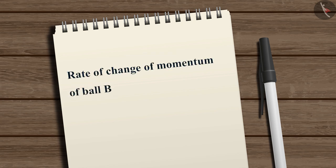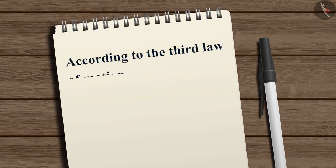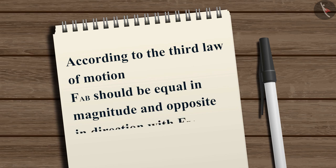In the same way, the rate of change of momentum of ball B, which is equal to F_BA, equals M_B multiplied by (V_B − U_B) divided by T. Now, according to the third law of motion, the force F_AB exerted by ball A on ball B should be equal in magnitude and opposite in direction to the force F_BA exerted by ball B on ball A.